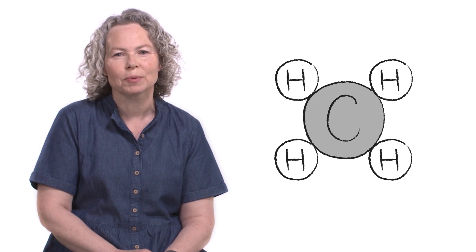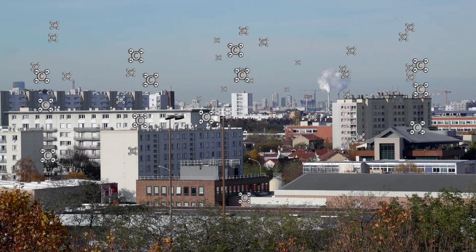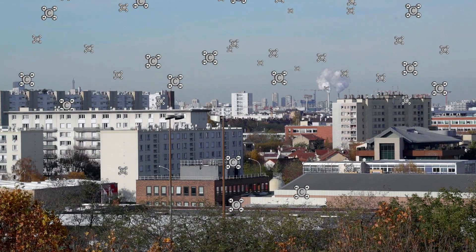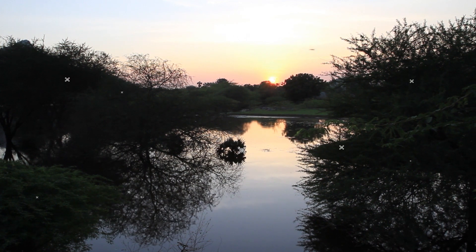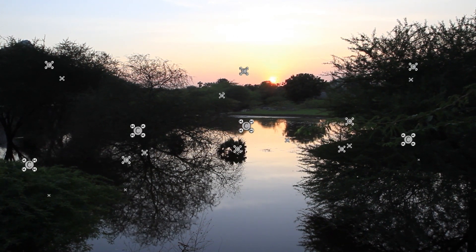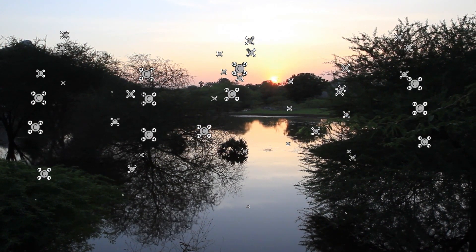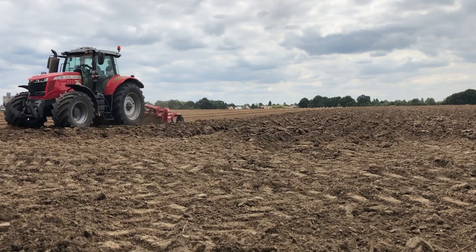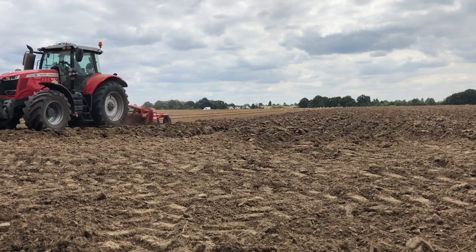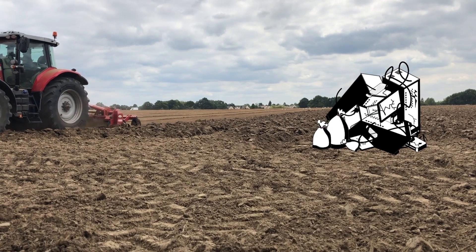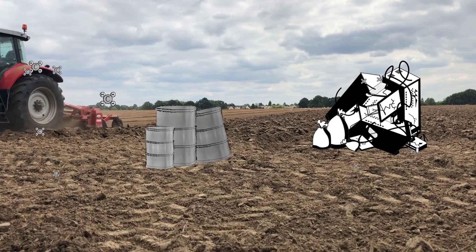The greenhouse gas methane is part of the carbon cycle. It has both natural and man-made emissions. Wetlands are the largest single source of natural emissions. Man-made emissions include agriculture, waste, and fossil fuels.